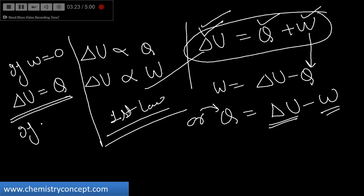And if it is an isothermal process, that means ΔU is equal to zero. In that case, whatever heat is given to the system will be converted into work, and work done will be converted into heat.